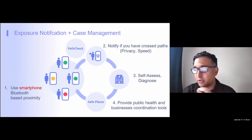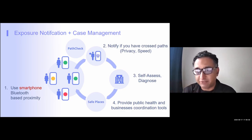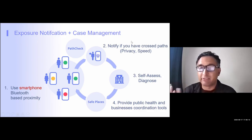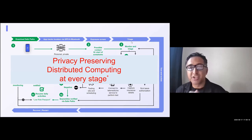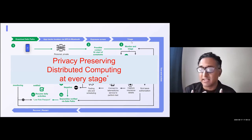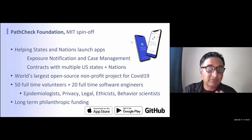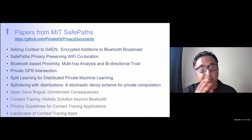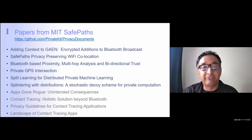For exposure notification and contact tracing, the classic method uses smartphone Bluetooth-based neighborhood calculations to notify you if you crossed paths with someone later diagnosed positive. Once you get that notification, the person does a self-assessment and diagnosis, and public health coordination tools are created. The challenge is doing this in a privacy-preserving way — no phone number, name, email address, or student ID should be required. We spun out a non-profit from MIT in April and are helping many states and nations launch their apps, with the goal that raw data never gets sent to a server.